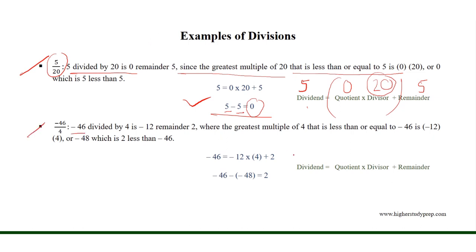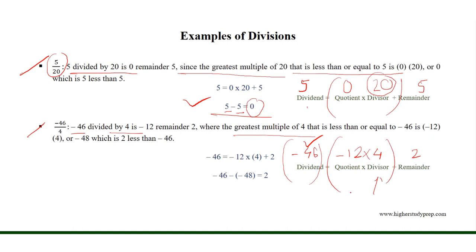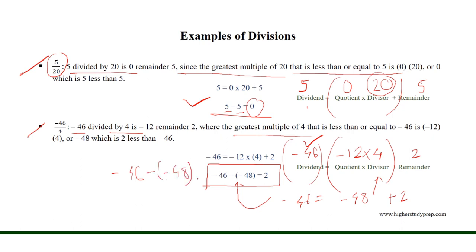So, minus 46 divided by 4, where minus 46 is the dividend and 4 is the divisor. Minus 46 divided by 4 is minus 12 remainder 2, where the greatest multiple of 4 that is less than or equal to minus 46 is minus 12 times 4, or minus 48, which is 2 less than minus 46, as minus 46 minus minus 48 equals 2.